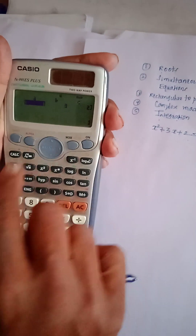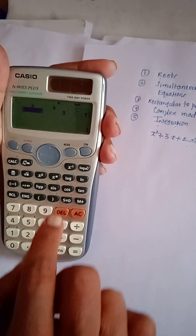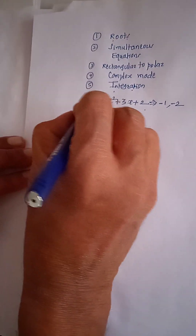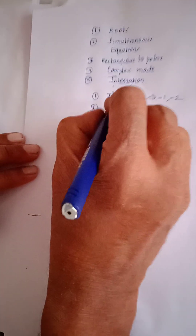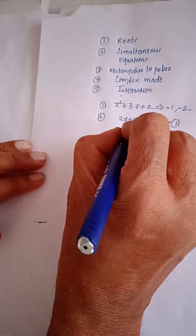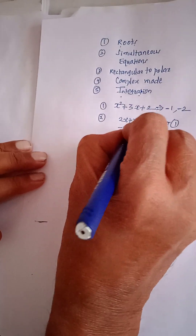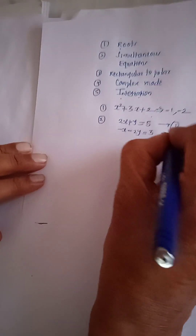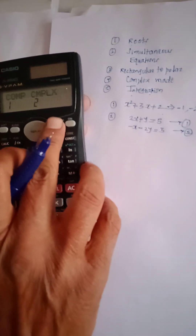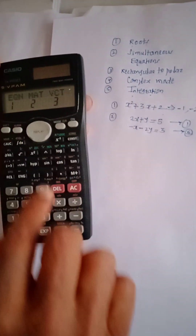After completing this calculation, reset the FX-991EX by pressing Shift, then the 9 key, then press 3. Now for the second topic: how to solve simultaneous equations. As an example, consider two equations — equation 1: 2x plus y equals 5, and equation 2: minus x minus 2y equals 3. On the FX-991MS, press Mode repeatedly until you get the Equations option, then press 1.